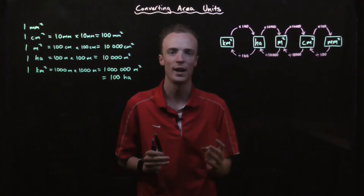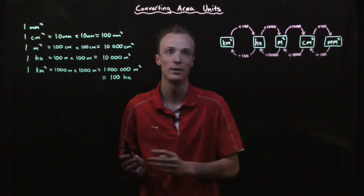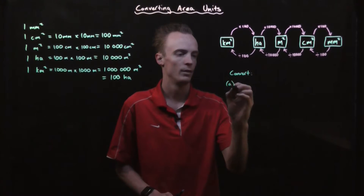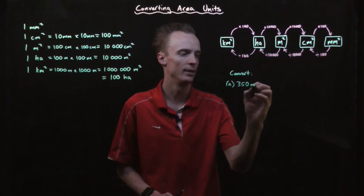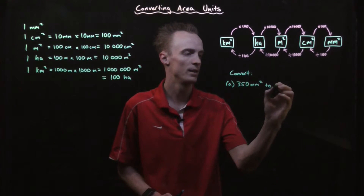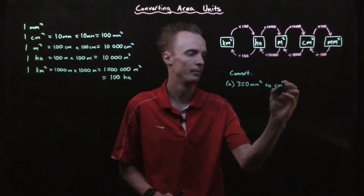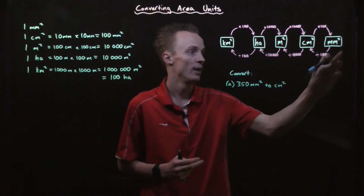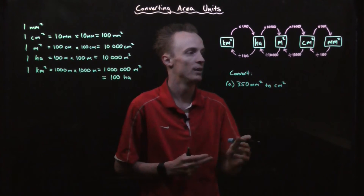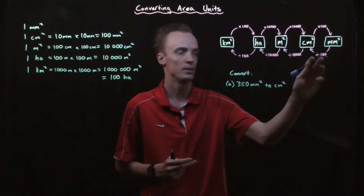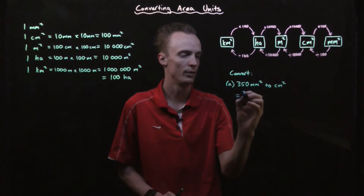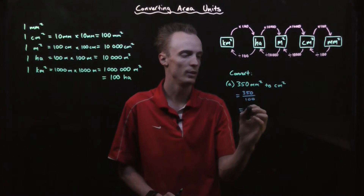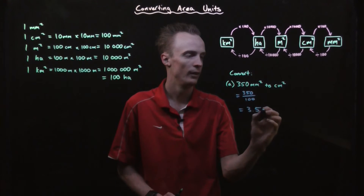Now I've got my conversion chart, let's look at how we use it to convert between different area units. Let's say I wanted to convert 350 square millimetres to square centimetres. I look at where I start, which is square millimetres, and where I need to go, which is square centimetres. To get there I need to divide by 100. So 350 square millimetres divided by 100 gives me 3.5 square centimetres.